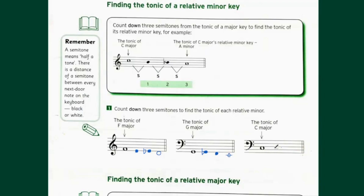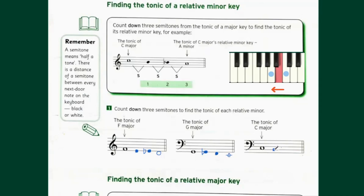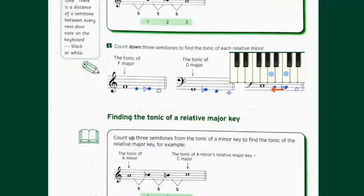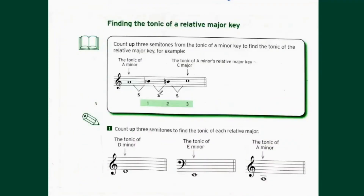For C major, count down three steps: B, B flat, A. So A minor is the relative minor of C major. Now, sometimes you may have to find the major key from a given minor key. In that case, you count up three semitones in reverse. In the example shown, from A minor we count up three steps: B flat, B natural, C — giving us C major.